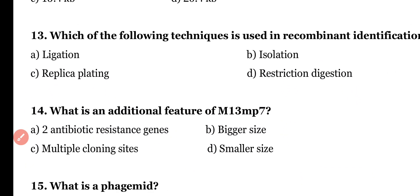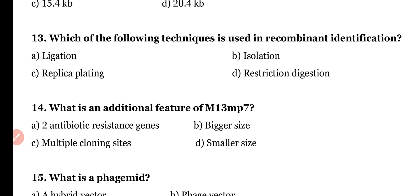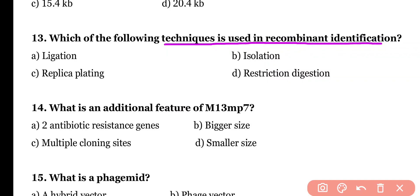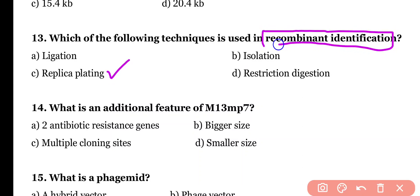Question 13: Which of the following technique is used in recombinant identification? Ligation, isolation, replica plating, or restriction digestion. Correct answer is option C — replica plating.